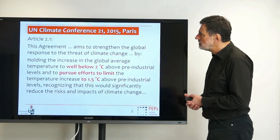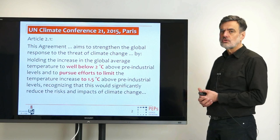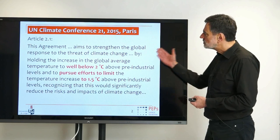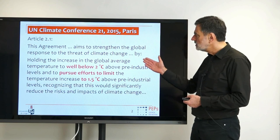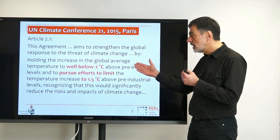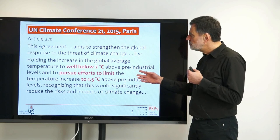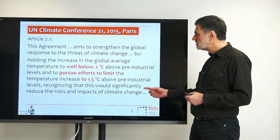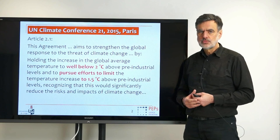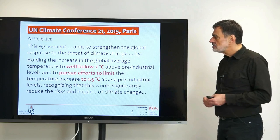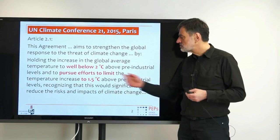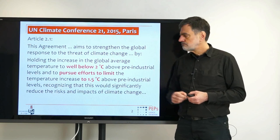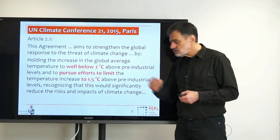The starting point is the UN climate conference that took place at the end of 2015 in Paris, in which an agreement was achieved. Article 2.1 of that agreement aims to strengthen the global response to the threat of climate change by holding the increase in the global average temperature to well below 2 degrees centigrade above pre-industrial levels, and to pursue efforts to limit the temperature increase to 1.5 degrees centigrade, recognizing that this would significantly reduce the risks and impacts of climate change.